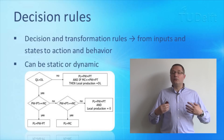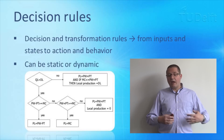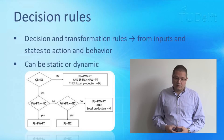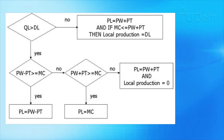The decision rules are the decision and transformation rules that take inputs and states and convert them into some kind of actions and overall behaviors. These can be static or dynamic. For example, here is a simple reasoning logic for setting a price based on a cost-plus-margin mechanism. This can be very elaborate — people have used genetic algorithms, genetic programming — or very simple, such as: if it rains and I do not have an umbrella, I will buy one. The action becomes the buying, and the state is being wet, yes or no.